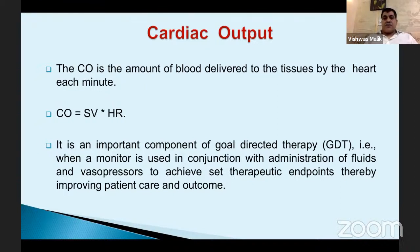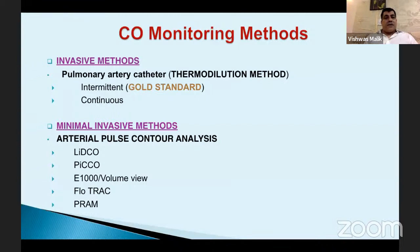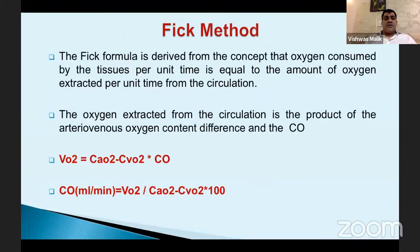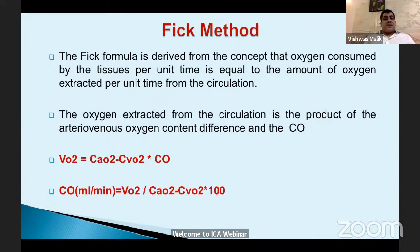All of us clinicians wish to improve patient outcomes — that's why we need more data. The scope of this talk covers intermittent and continuous cardiac output monitoring. The three most common principles in relation to the PA catheter are the Fick principle, dye-dilution, and thermodilution. The Fick formula is derived from the concept that oxygen consumed by tissues per unit time equals the amount of oxygen extracted per unit time from the circulation — the product of arteriovenous oxygen content difference and cardiac output.